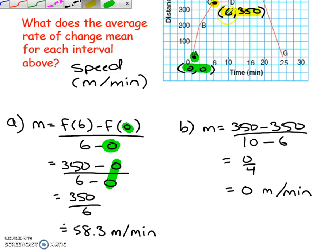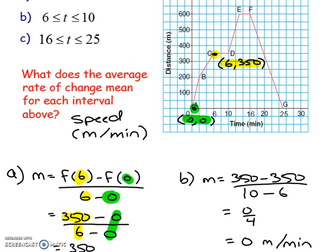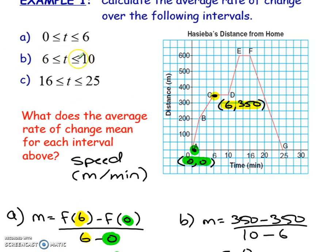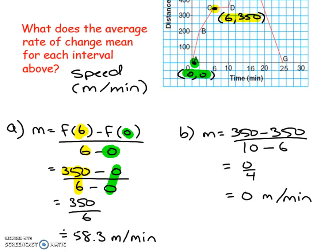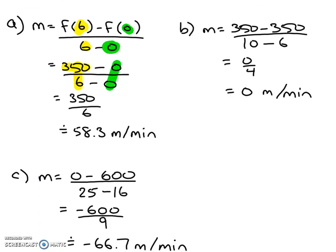If you had an equation, you would take your 6, sub it into the equation, and get your new y value. But since we already have it right here, we can cheat. Our 6 was at 350 meters. These are our two yellow numbers, and then we're just going to subtract and divide. We get a speed of 58.3 meters per minute, on average, between 0 and 6 seconds. We could also calculate between 6 and 10 seconds, and 16 and 25 seconds. They're pretty much the same formulas.